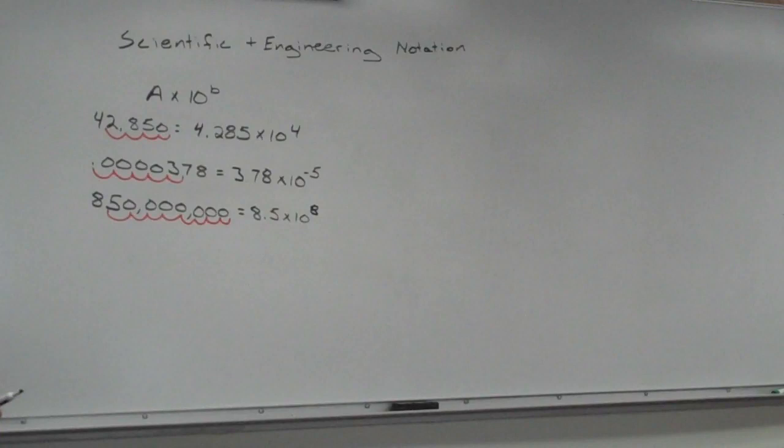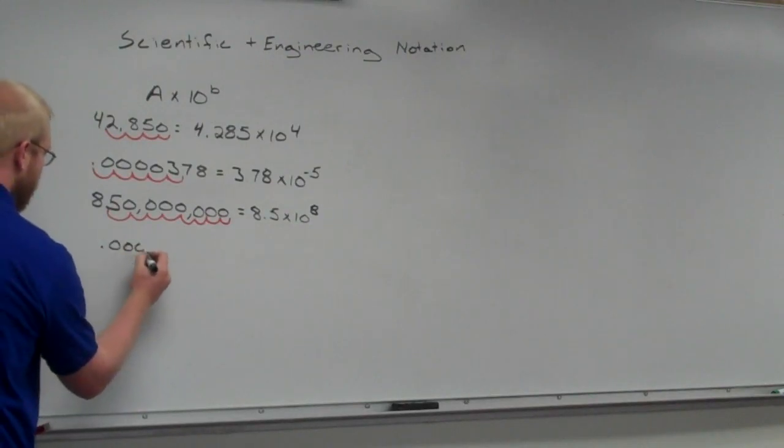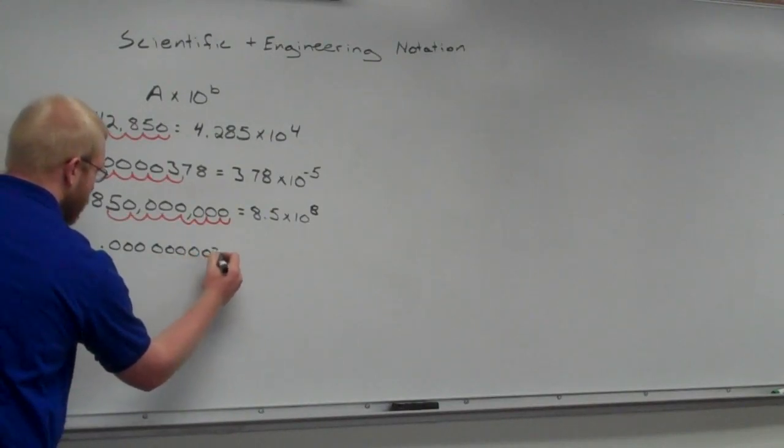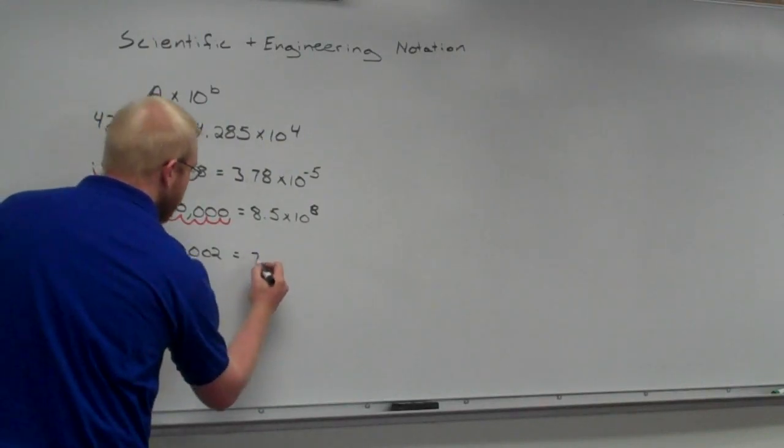There's that one. Let's go ahead and do one more with a bunch of 0's in the front, so you guys can deal with the negative one. So, if I've got 0.00000002. What's that going to be equal? 2 times 10 to the 8th. Negative 9.